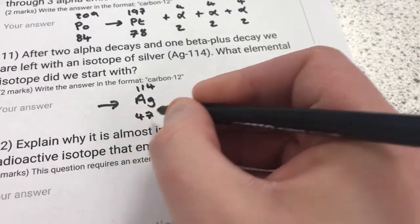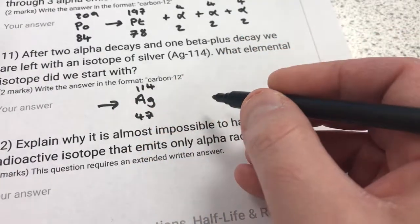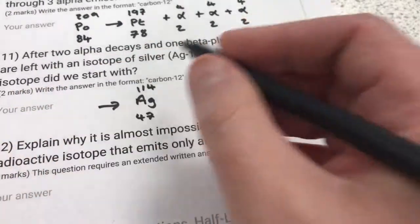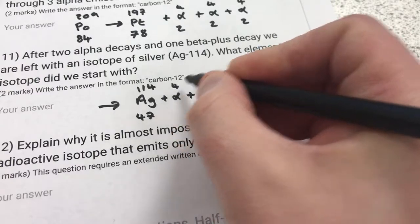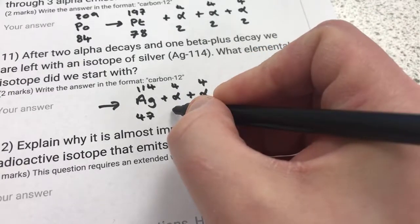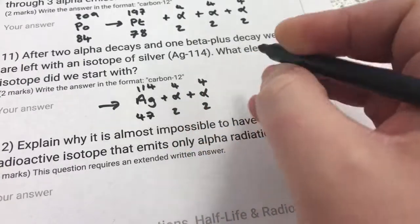So 47 is what I'm after there. And this is after two alpha decays, so plus alpha, plus alpha, each of those have a mass of 4, 4, and an atomic number 2, 2, or charge of 2.